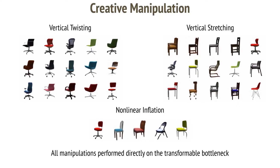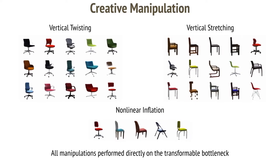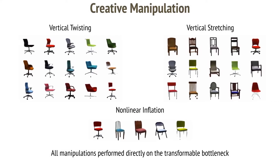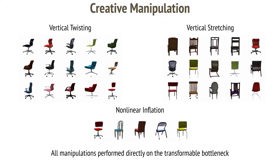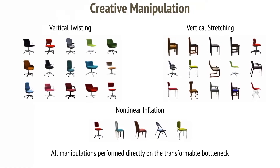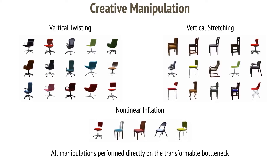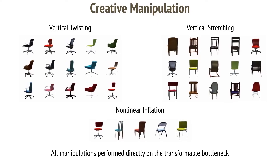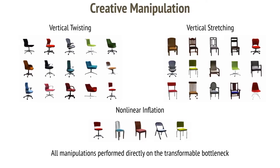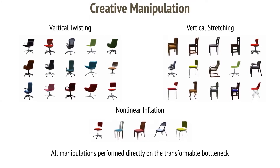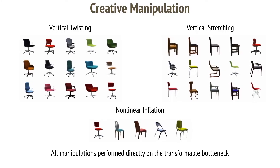Here we demonstrate a variety of creative manipulation tasks involving non-rigid transformations of the volumetric bottleneck. By twisting the top and bottom of each volumetric bottleneck in opposite directions around the vertical axis, we can produce a swiveling effect in the chair. By stretching regions of the bottleneck in the vertical dimension, we can change the overall proportion and structure of the chairs. We can also apply non-linear inflation to change the relative size and shapes. Notably, none of these non-rigid transformations were ever seen during training.